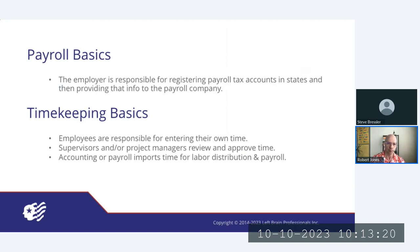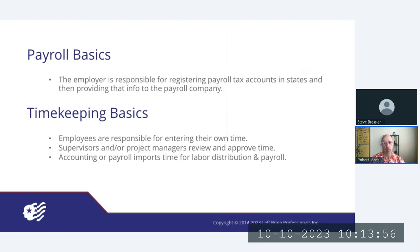A question has come up: throughout my career I've been told that the government requires time to be recorded daily, yet I'm not able to actually locate this requirement. This is actually not a FAR or CAS requirement. The timekeeping requirements are found in DCAA's Information for Contractors. You can Google 'DCAA information for contractor' or go to DCAA's website and look in the customer information section. It's a separate document called the Information for Contractors. Great question — it comes up on a regular basis.